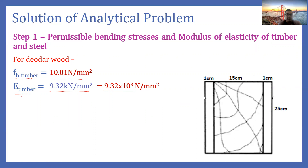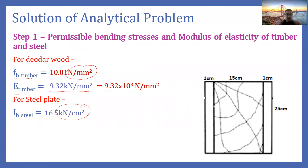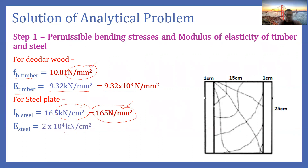For steel, the permissible bending stress is already given in the problem as 16.5 kilonewton per centimeter square. Converting to newton per mm square gives fb = 165 newton per mm square. So the maximum permissible bending stress in steel is 165 while in timber it is only 10.01 newton per mm square. The modulus of elasticity for steel is 2 × 10⁵ newton per mm square.